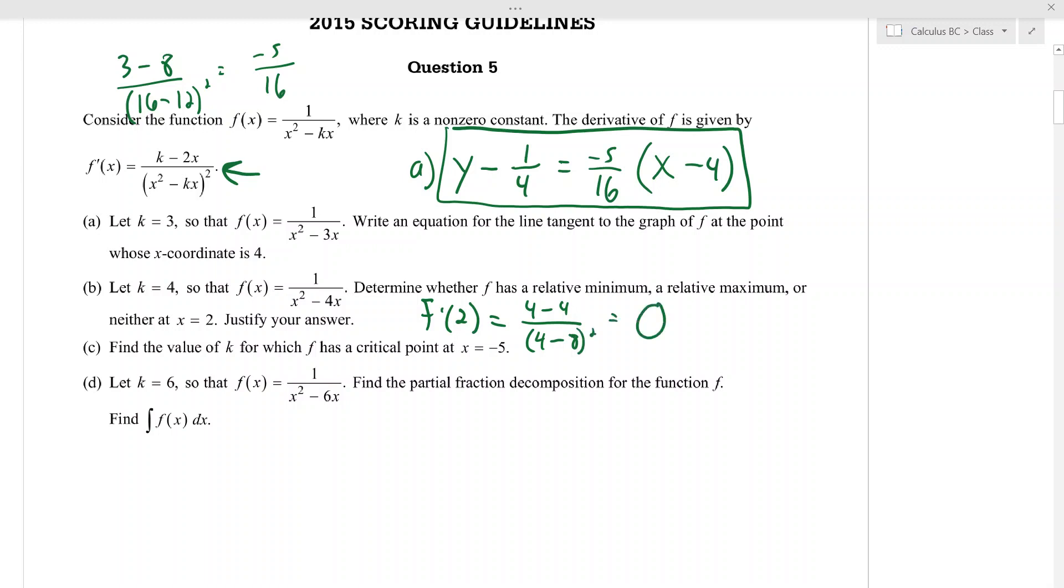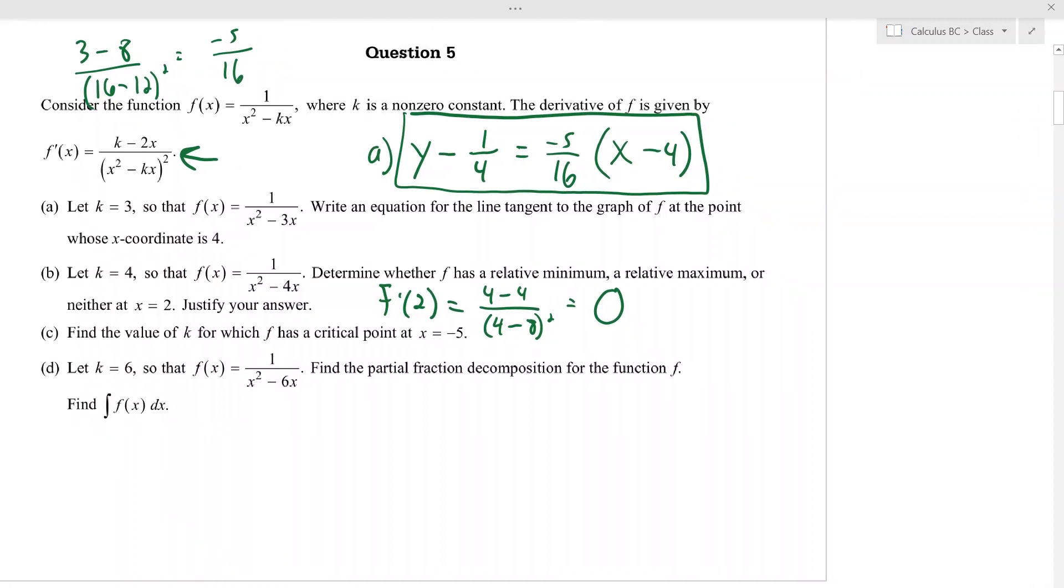So f prime of 2 is 0. And then all you got to do is check—you can check the second derivative, or you can check both sides of the derivative at 2 if you want to do that. So I'm going to write the derivative out. It is—what is k? 4. So it's 4 minus 2x over x squared minus 4x, squared.